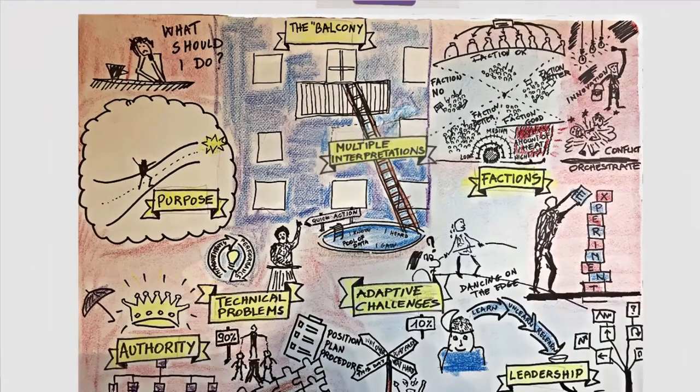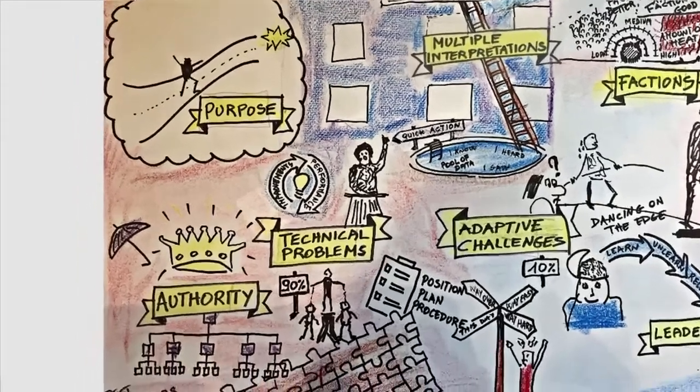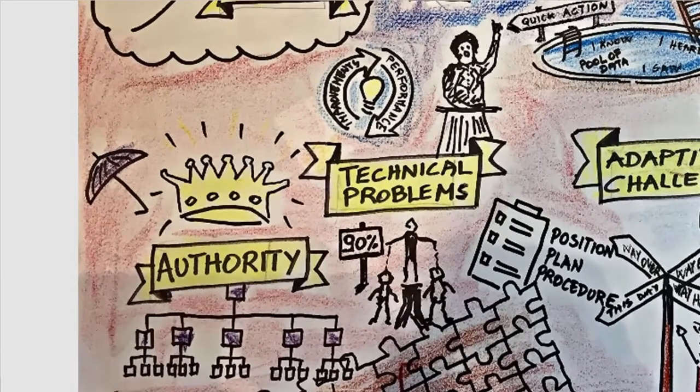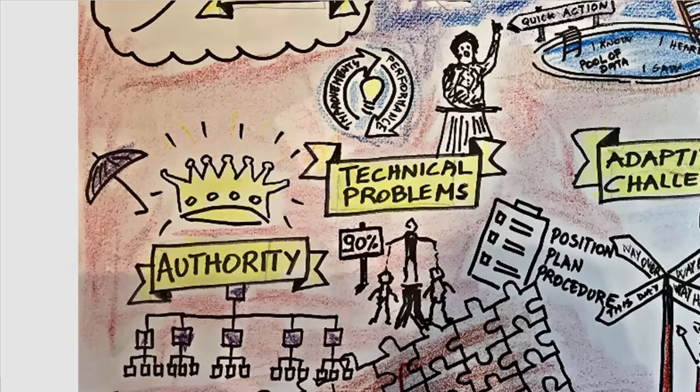Two very distinct kinds of work get into focus from the balcony. One kind of work is dealing with technical problems—the expertise-driven deliverables that require efficient execution based on current know-how, control, following procedures.